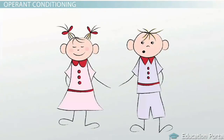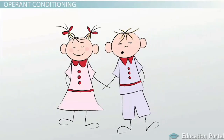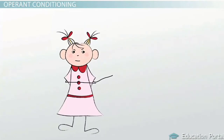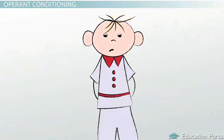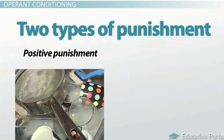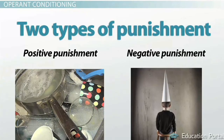Returning to the kiss example, if when you attempted to kiss someone they became angry and pushed you away, that would be an example of punishment and would probably decrease the likelihood that you would seek a kiss from that person again. There are two types of punishment in operant conditioning. Positive punishment is the addition of something undesirable, such as a child receiving a spanking or extra chores for misbehaving. Negative punishment is the removal of something pleasing, such as a child being placed in timeout or losing video game privileges for misbehavior.